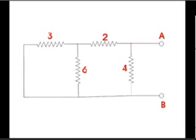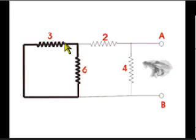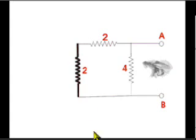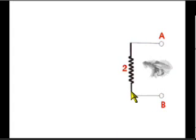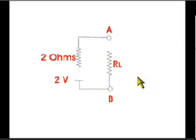After replacing the source by short circuit, we will look at the network from points A and B. Here in the network, this 3 ohms resistor and 6 ohms resistor are parallel. Hence equivalent resistance of this combination will be 3 into 6 divided by 3 plus 6, that is 2 ohms. Now this equivalent 2 ohms is in series with another 2 ohms resistor, hence resultant resistance of this combination will be 2 plus 2, that is 4 ohms. This 4 ohms resistance then again is in parallel with another 4 ohms resistance. Hence resistance offered by the network is 4 by 2, that is 2 ohms. Hence open circuit voltage and resistance offered by the network across the points A and B are 2 volts and 2 ohms respectively.